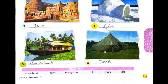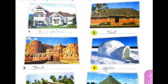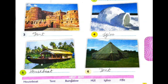So children, the first one is bungalow. Second one is hut. Third one is fort. The fourth one is an igloo. Fifth one is houseboat. And last, sixth one is tent.